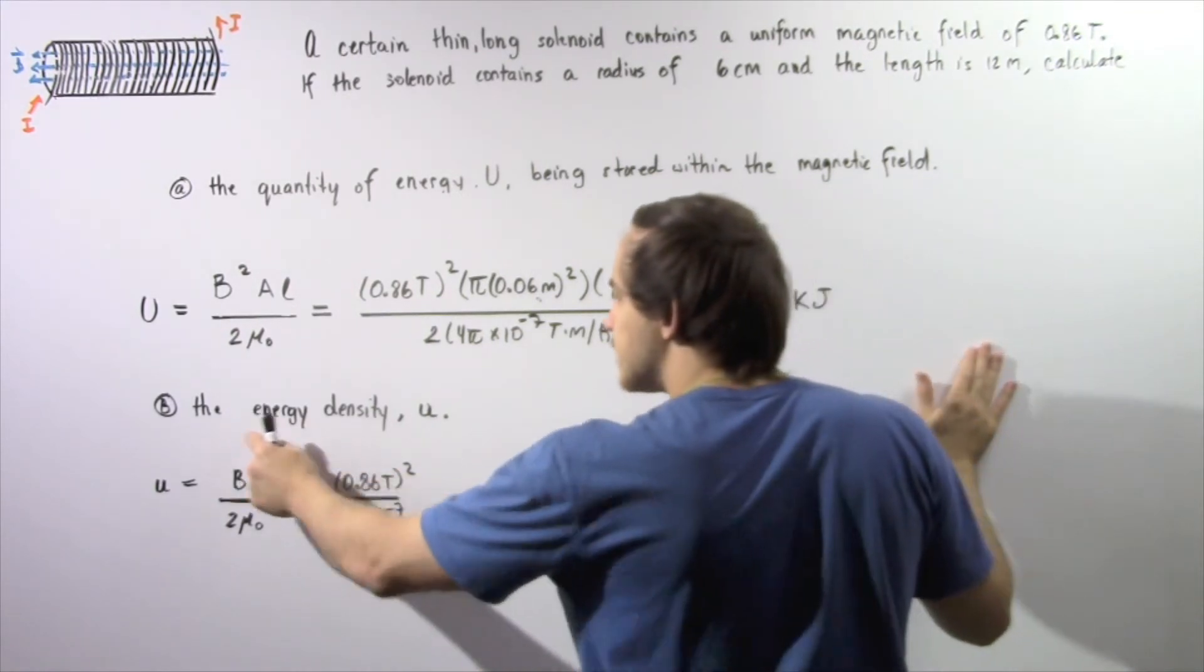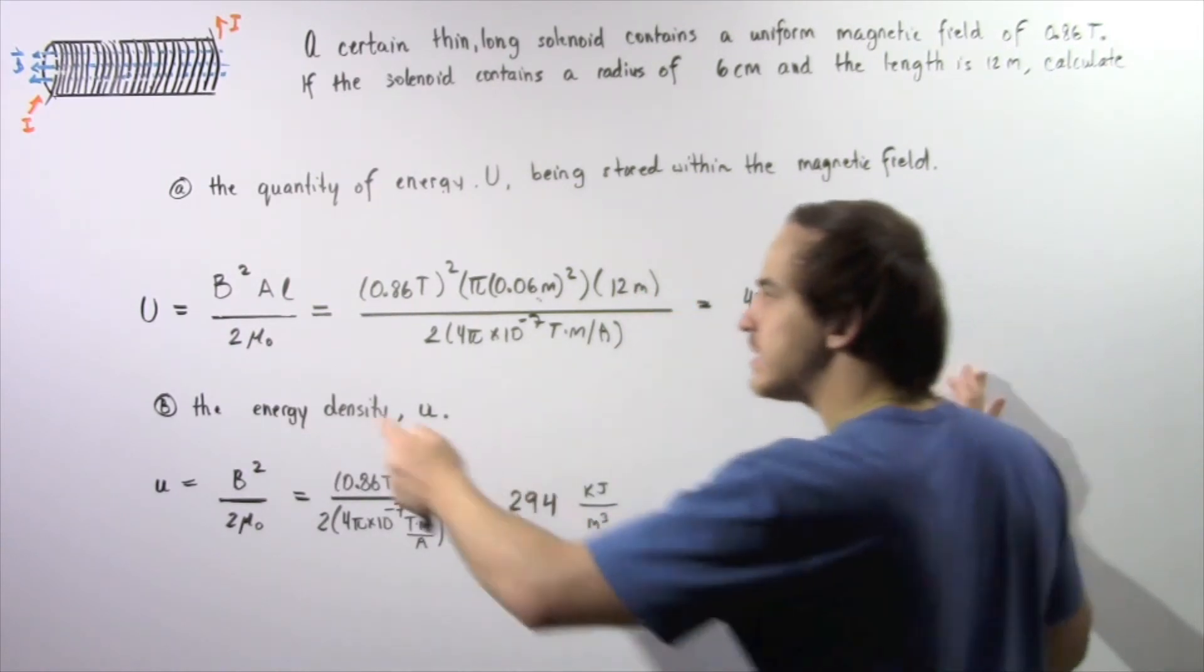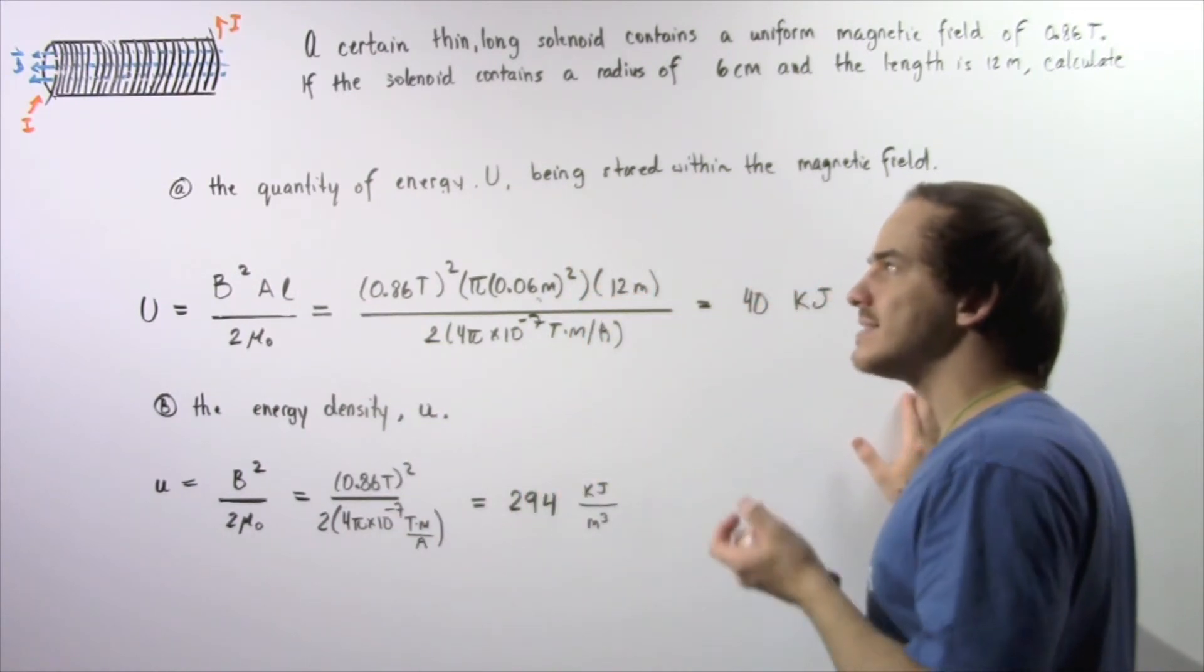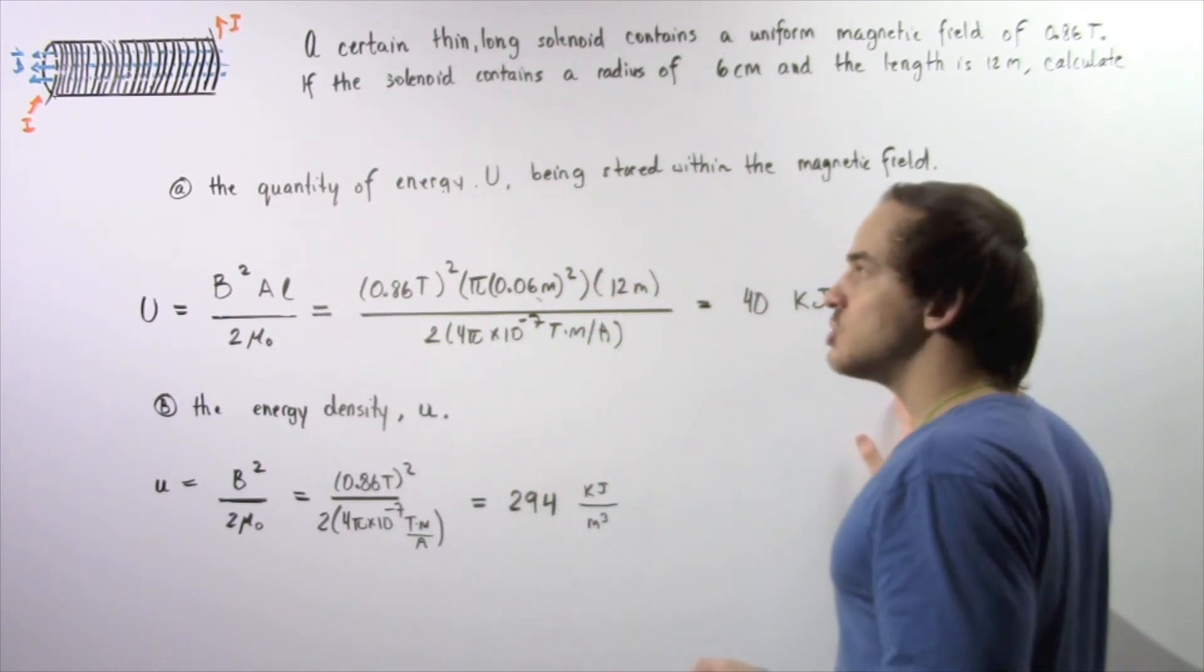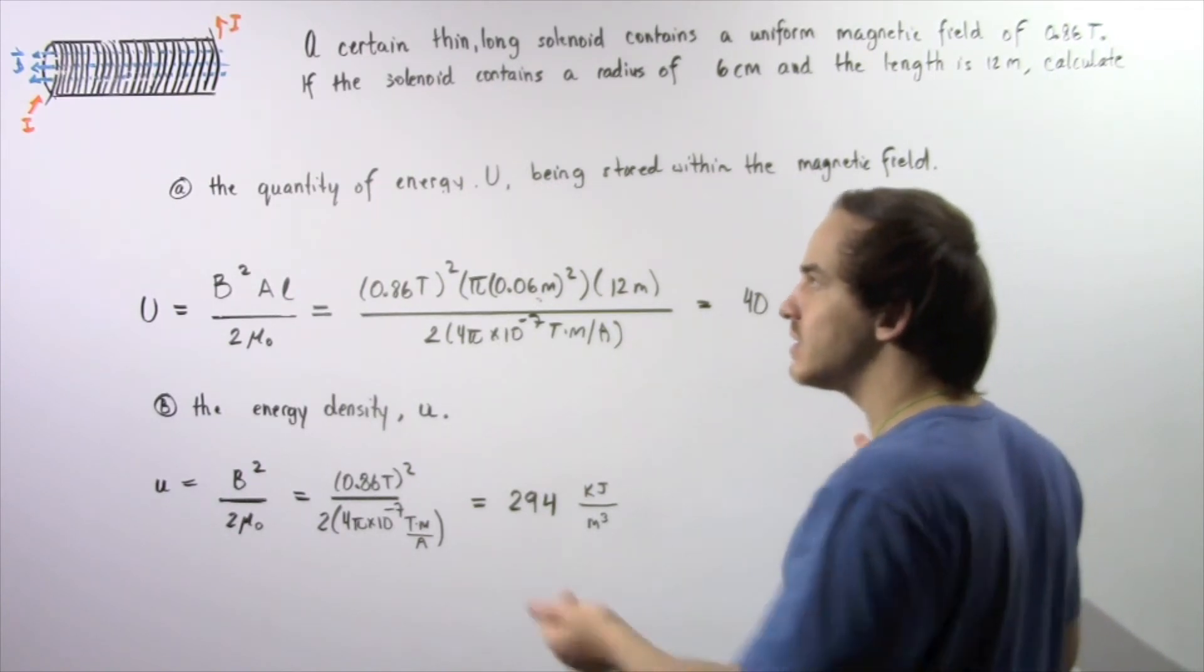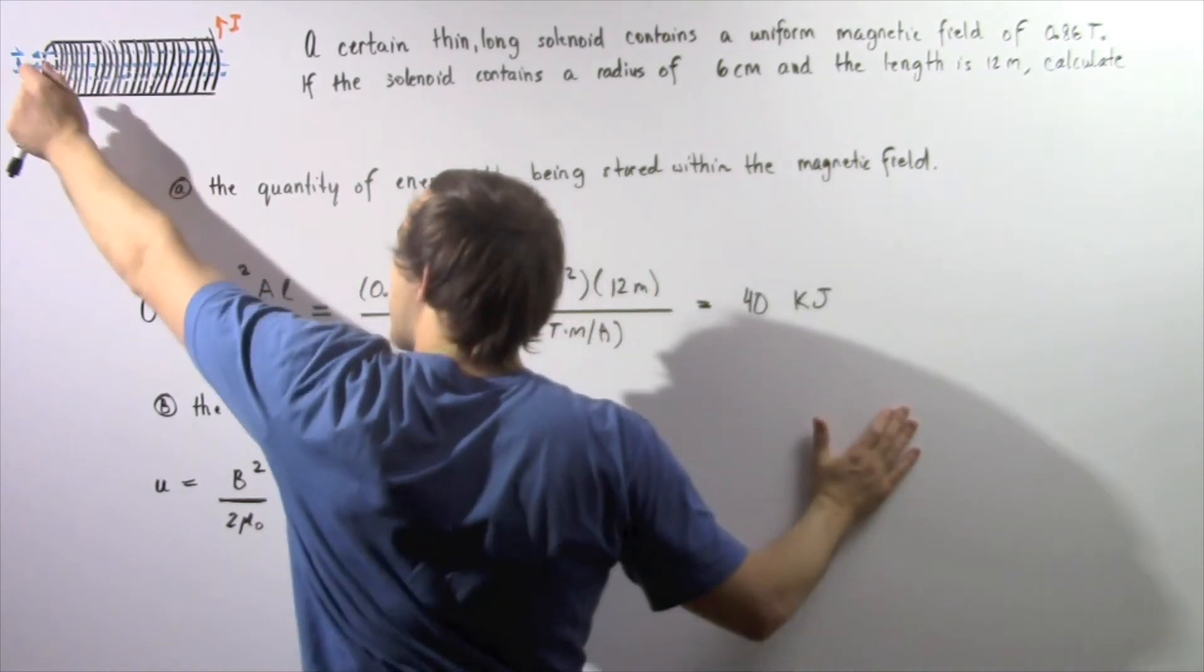Now in part B, to calculate the energy density we can simply take this equation and divide it by the volume inside our solenoid. Since the volume of the solenoid is simply the product of the length of the solenoid and our cross-sectional area A,